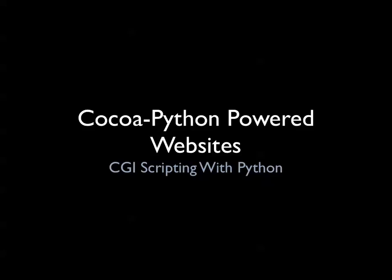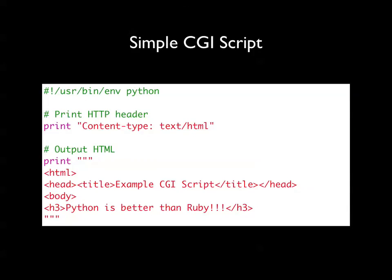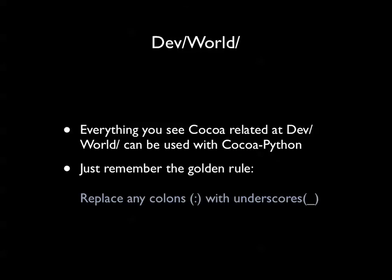You can use Cocoa in websites as well. If you've got some fancy image processing you want to do in a website — for example, where the user can upload an image — you can have Python scripts running on a Mac OS X server to do that for you using Cocoa. I'll put sample code online rather than running through that demo. Basically, everything you've seen here today — all the Cocoa stuff at other sessions — can be done using Cocoa Python. Just because the examples are in Objective-C doesn't mean you can't do it in Cocoa Python. Remember the rule: replace colons with underscores and you should be good to go.